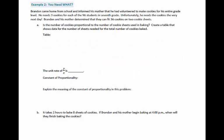Let's take a look at Example 2. This is another example of how we can find the constant of proportionality and then use it. Sometimes it helps to make a table to visualize things. In this one, Brandon came home from school and told his mother he had volunteered to make cookies for his entire grade level. He needs 3 cookies for each of the 96 students in 7th grade. Unfortunately, he needs the cookies the very next day. Brandon and his mother determined that they can fit 36 cookies on 2 cookie sheets. Now we're going to figure out: is the number of cookies proportional to the number of cookie sheets used in baking?